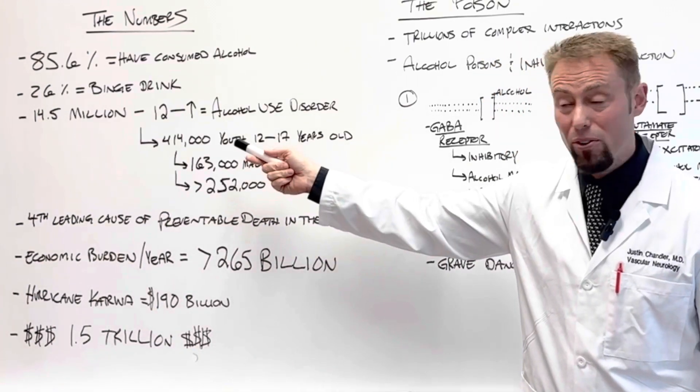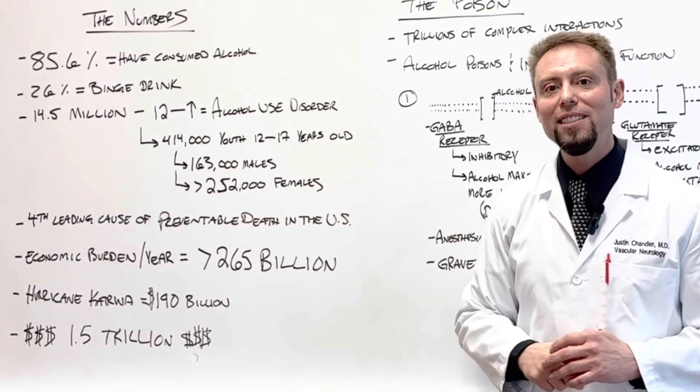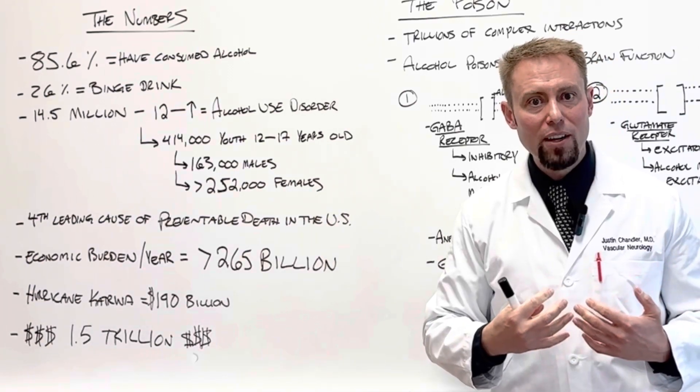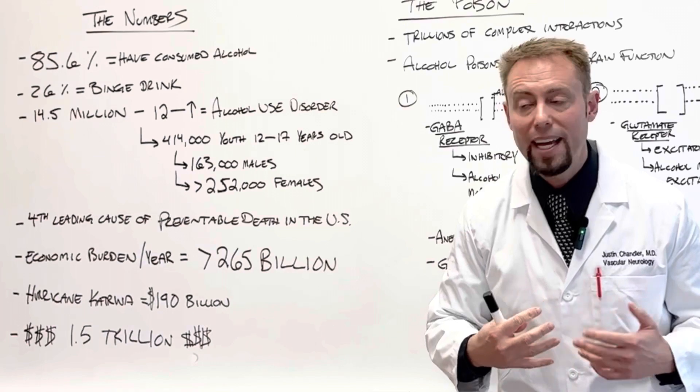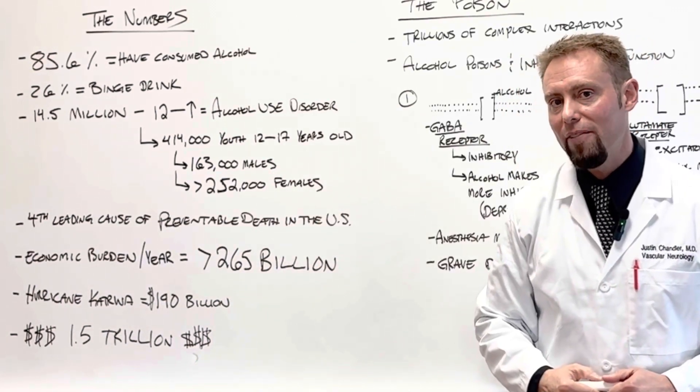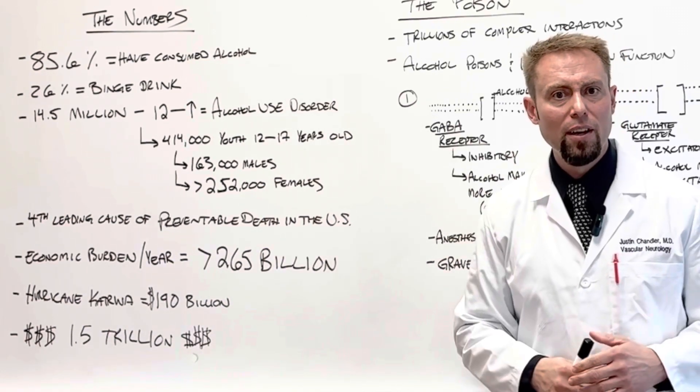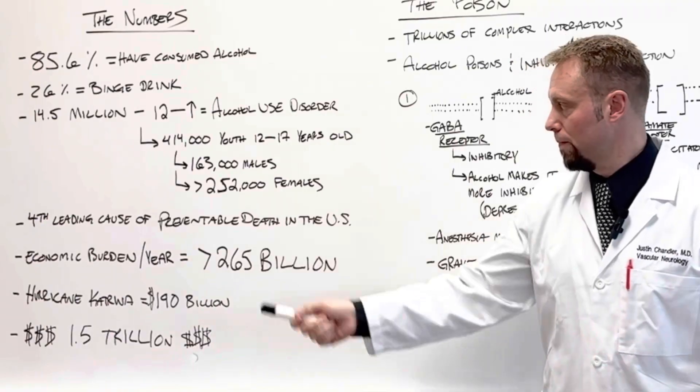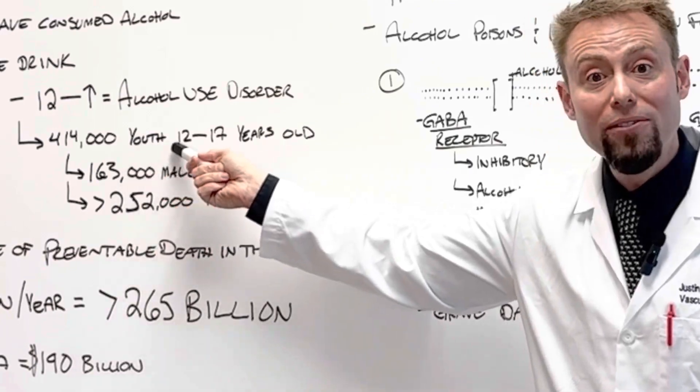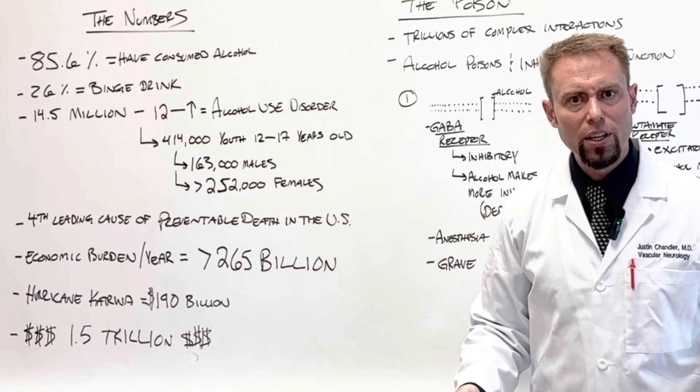And we can break those numbers down even further. 414,000 youth age 12 to 17 have alcohol use disorder. They're consuming enough alcohol that this is affecting what they do every day. In fact, 163,000 males have alcohol use disorder. And you know what's even more shocking? 252,000 females age 12 to 17 have alcohol use disorder. That's almost double what young men have.